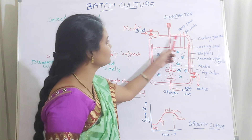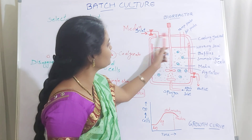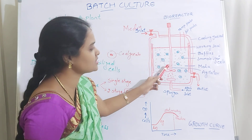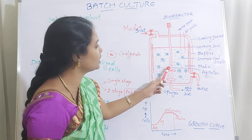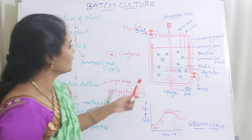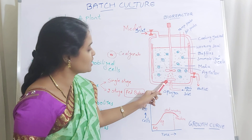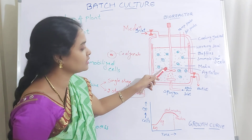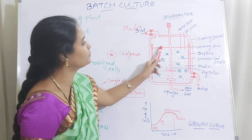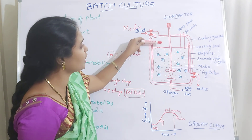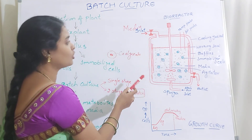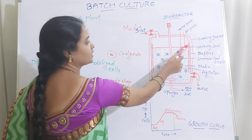Now let us see the design of the bioreactor. The bioreactor has different parts. The first one is the agitator or impeller which rotates inside — it is for mixing the media and the cells so that all the cells get proper nutrition. Then you have the sparger for sterile air inlet for the aeration process. Then there is the media inlet — you add the media only up to the working level, which is no more than three-fourths full. If you fill it completely, it will contaminate all the nozzles, so you fill only up to three-fourths.